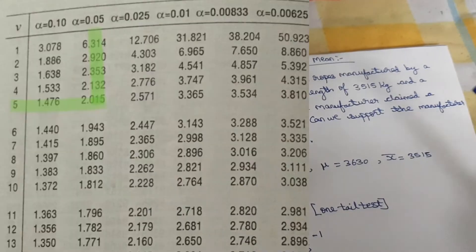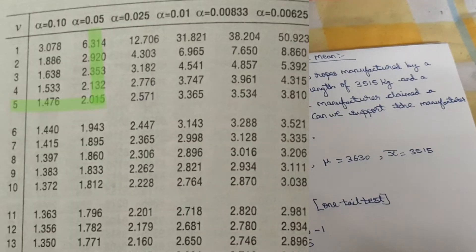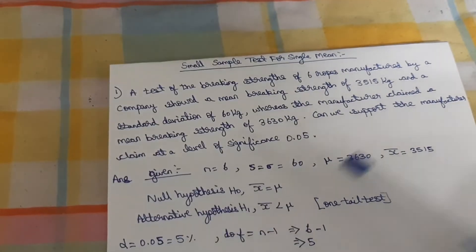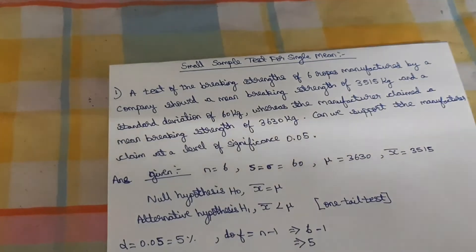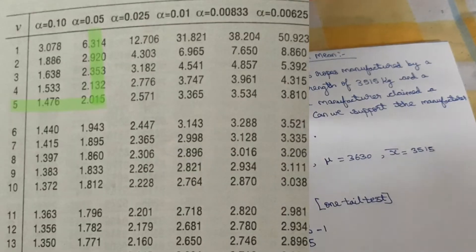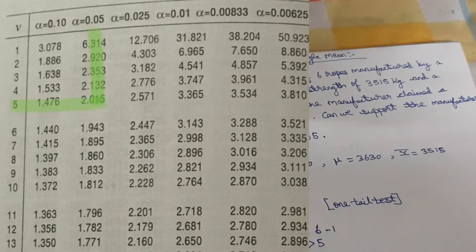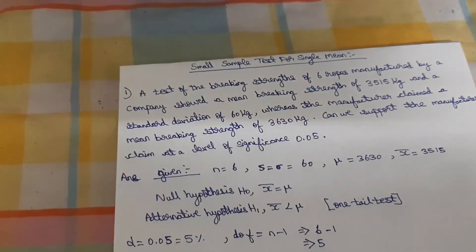Alpha is 0.05. If you look up the t-table with alpha 0.05 and degree of freedom 5, you will get the table value of 2.01.